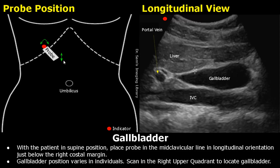With the patient in a supine position, start by placing the probe in the mid-clavicular line in longitudinal orientation. The position of the gallbladder is variable, so there are some differences in probe placement. Scan the right upper quadrant until you locate the gallbladder.